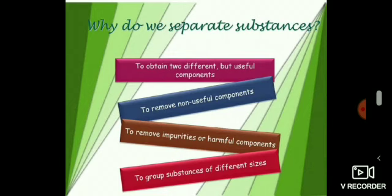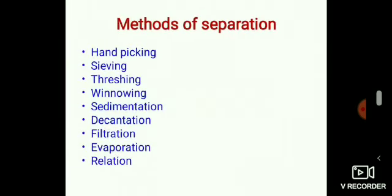We will now describe the methods for the separation of mixtures. Many of the materials around us are mixtures with two or more substances mixed in them. It may not be possible to use a mixture as such in homes and industries. We may require only one separate component of a mixture for our use. The various components of a mixture have different physical properties such as hardness, density, solubility, size of particles, and behaviour towards magnet. This difference in physical properties of components is used to separate them from a mixture. So when we want to separate components, we should first find out properties which would be different for different components.